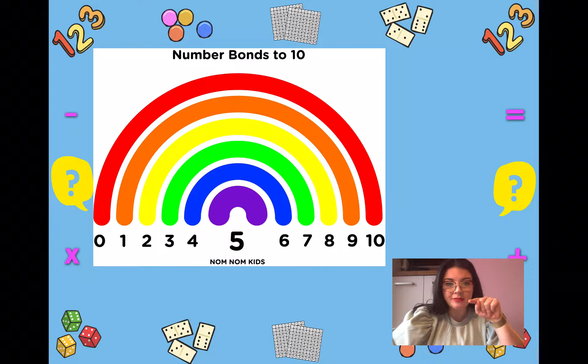Can you look at the orange one? The orange one starts on the right as 9 and then you follow the arch all the way around the orange arch and it gives you 1, so we know that 9 and 1 must make 10.